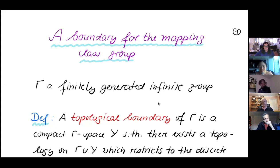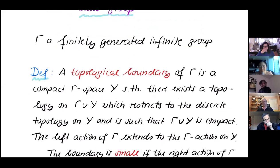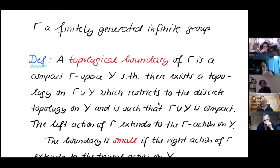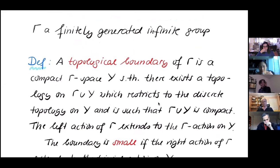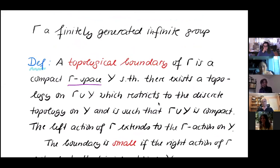A topological boundary for the group is supposed to be a compact gamma space. A gamma space here is a space on which the group acts as a group of homeomorphisms, so we have a topology.